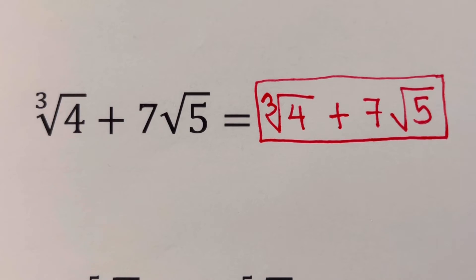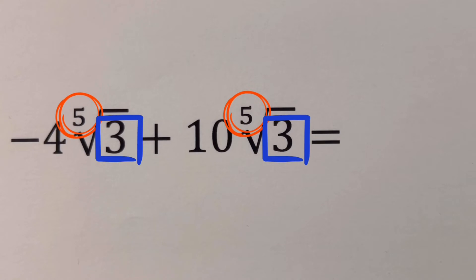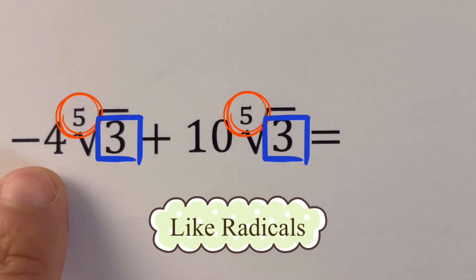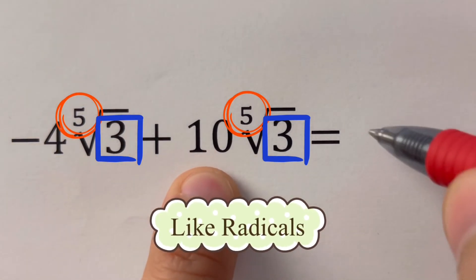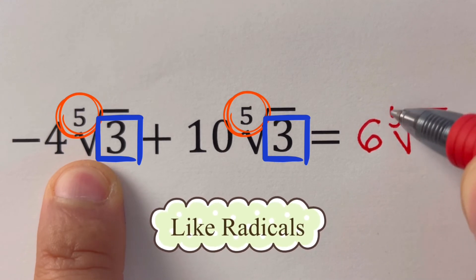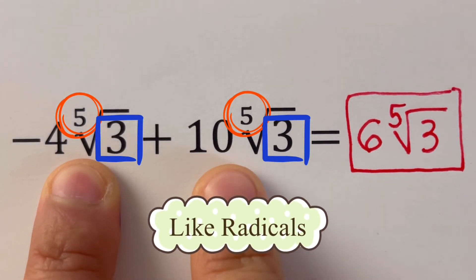In the next example, both indices are 5 and both radicands are 3, so this is an example of like radicals. We add their coefficients and copy the radical expression: negative 4 plus 10 equals positive 6, giving us 6 times the fifth root of 3. That is the sum of these two radical expressions.